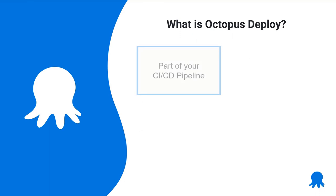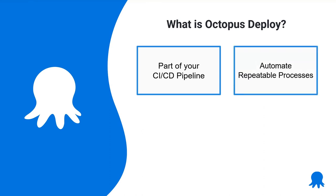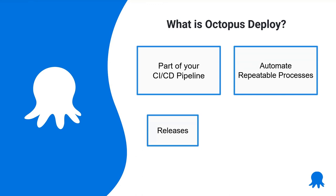So what is Octopus Deploy? It forms part of your CI/CD pipeline, sitting after your build server - something like Jenkins, Azure DevOps, or GitHub Actions - and then we handle all of the deploy steps after that. It gives us the ability to automate those repeatable steps. Every time we create a release and deploy it, it goes through the exact same steps every time, giving us a repeatable process. We have releases to manage all our releases, and then deployments to push our applications out to whatever infrastructure we like.